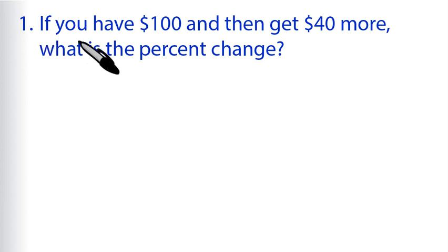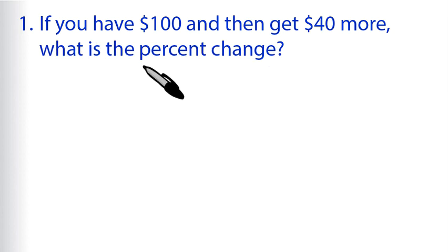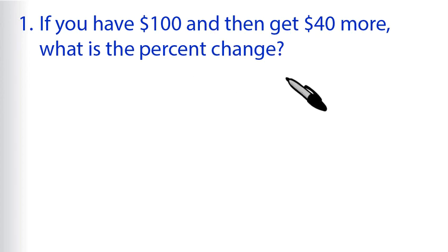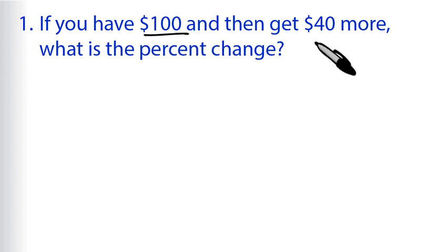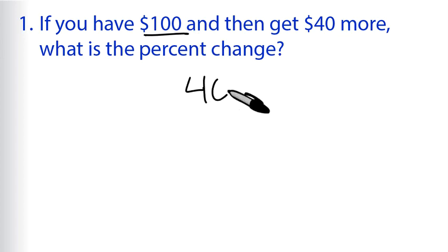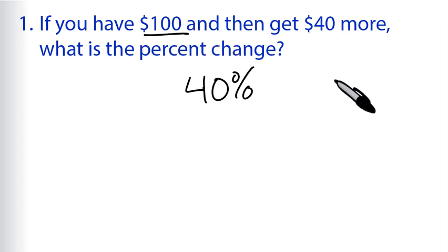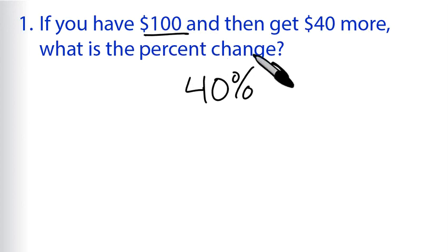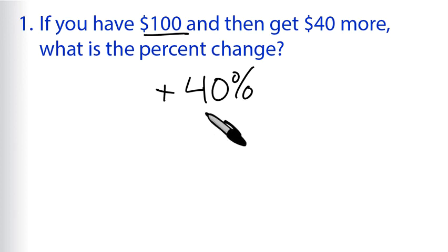Our first problem is: if you have $100 and then get $40 more, what is the percent change? For a percent change, we need to find out what this change was per 100. We do start with 100, so the change is $40 more. In percent form, that's 40% because it changed $40 per the original $100. It says $40 more, so it is a positive change — a 40% increase.